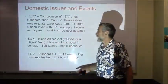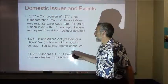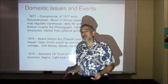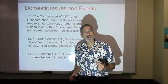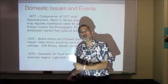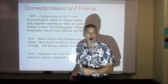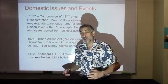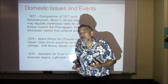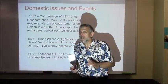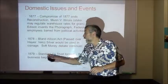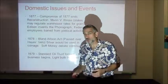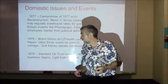We have the Bland-Allison Act in 1878. Hayes had vetoed this, but silver would be used in coinage. That's part of what's called the soft money debate. There's more silver than gold, so if silver can be used for coinage, more money is in circulation. The farmers — the people who really wanted this — would have more money to spend, and you'd get inflation driving the prices of farm products up. It's going to be a tough 20 years on this debate. In 1879, Standard Oil is formed — the first large trust in the United States and the beginning of big oil.